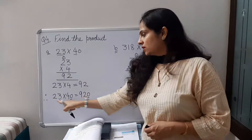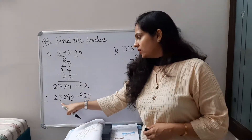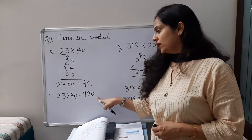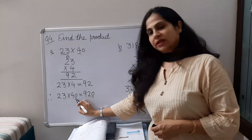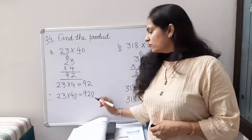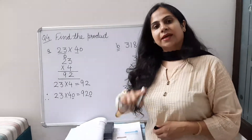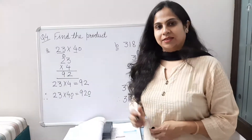23 multiplied by 40 is equal to 920. There is one zero, so we will add one zero on the extreme right side.